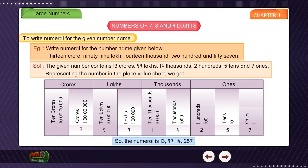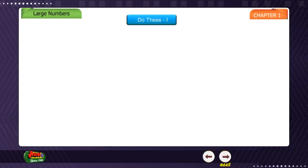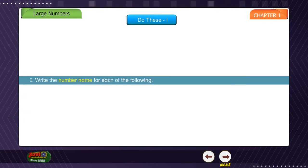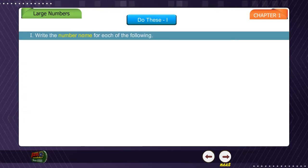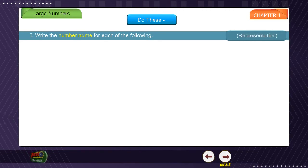The numeral is 13 crore, 99 lakhs, fourteen thousand, two hundred and fifty-seven. Exercise 1: Write the number name for each of the following representations.